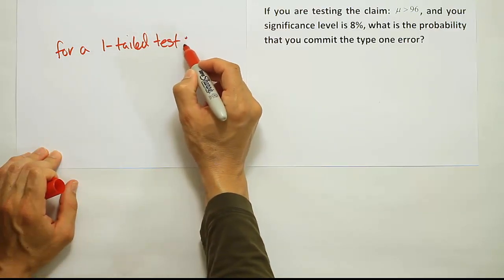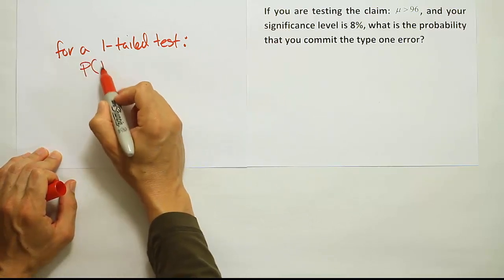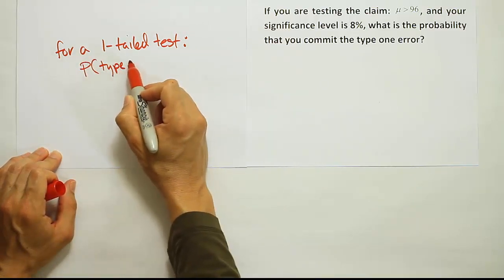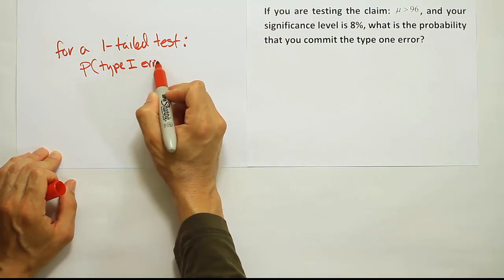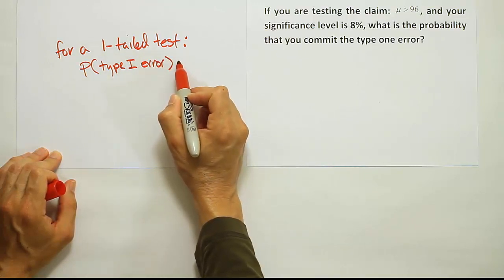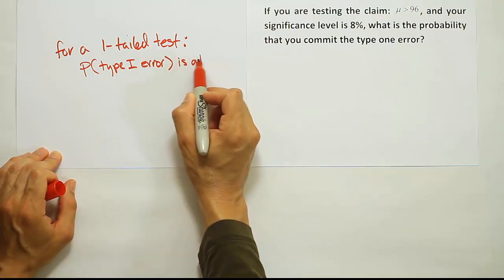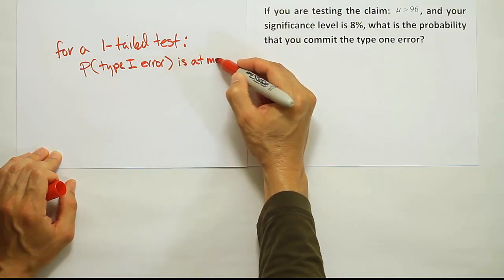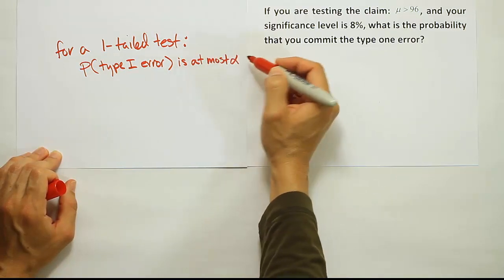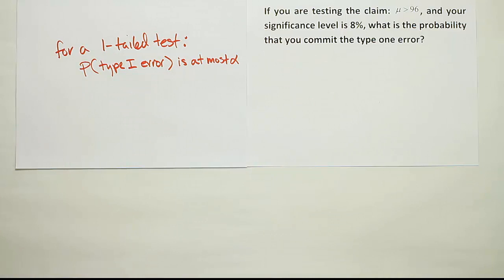the probability of a type 1 error is at most alpha, or at most your significance level.